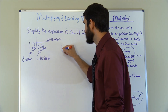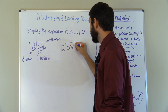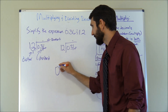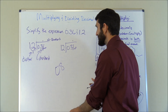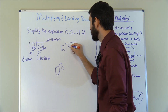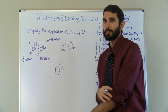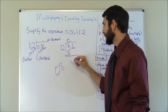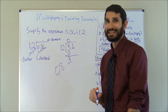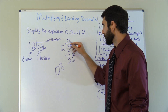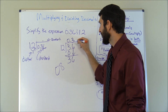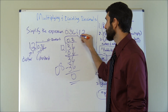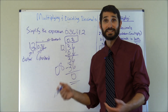Our new problem is 12 going into 3.6 with the decimal marked for the quotient. Removing the leading zero makes it cleaner: 12 going into 3.6. 12 goes into 3 zero times — zero times 12 is zero, 3 minus 0 is 3. 12 won't go into 3, so carry the 6 down to get 36. 12 goes into 36 three times — 3 times 12 is 36, and 36 minus 36 is zero. We're done. The answer is 0.3, so 0.36 divided by 1.2 is 0.3.